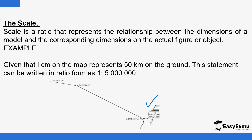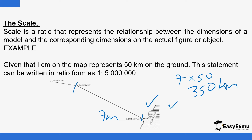An example is given here: one centimeter on the map represents 50 kilometers on the actual ground. If you measure the distance on the map with a ruler, it's approximately seven centimeters. So you multiply: if one centimeter is 50 kilometers, then seven centimeters gives approximately 350 kilometers — that's roughly the distance from Mombasa to Nairobi. This can also be written in ratio form instead of representative form.